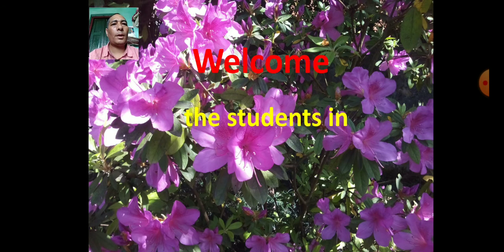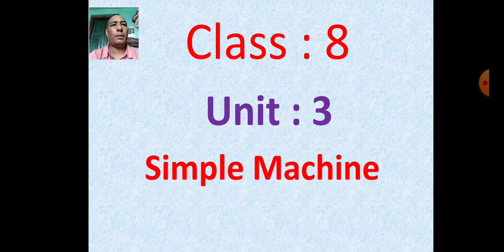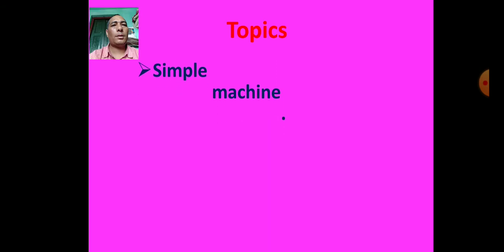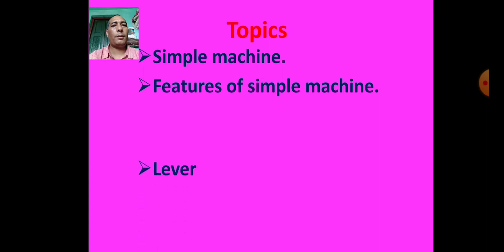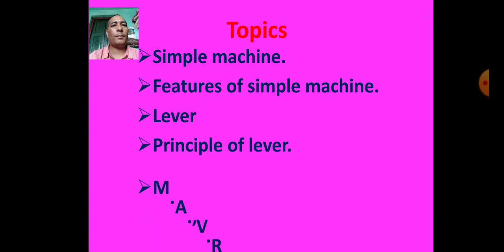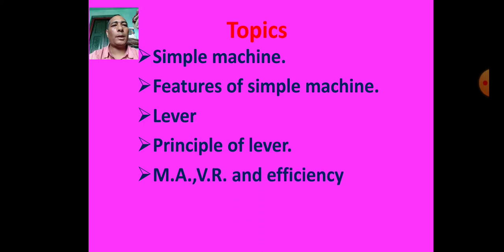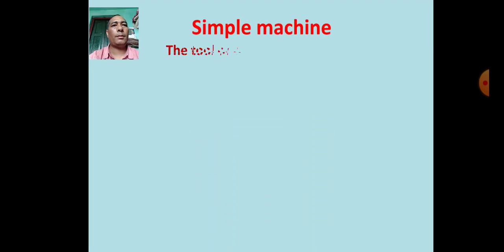Welcome to students in Science Class, Class 8, Unit 3: Simple Machines. Topics covered: simple machine, features of simple machine, lever, principle of lever, mechanical advantage, velocity ratio, efficiency, and numericals.